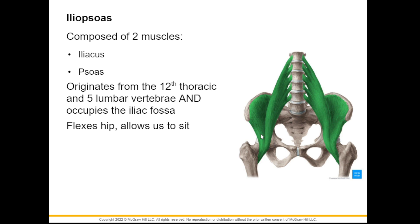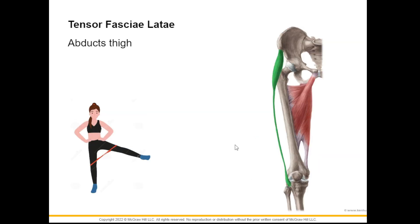On the hips you have the iliopsoas, which is a combination of two muscles: the iliacus and the psoas muscle. The iliopsoas originates from the thoracic spine and inserts into the femur. This muscle flexes the hips and allows us to sit down. We also have a very long muscle on the side called the tensor fascia lata, and once it contracts it will pull the leg towards the side — it is for abducting the thigh.